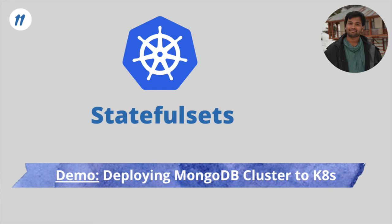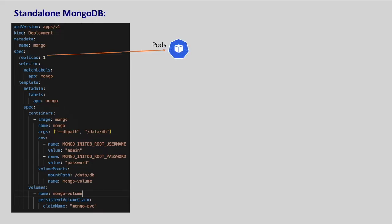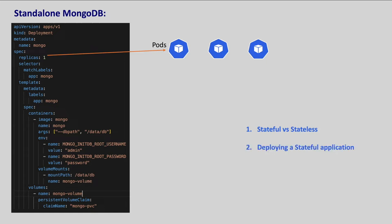Hey guys, welcome back to the Kubernetes series. In the Kubernetes Volumes chapter of this series, we deployed MongoDB with a single replica using deployments. But to achieve high availability and enhance overall performance and reliability, we should deploy multiple replicas. As MongoDB is a stateful application, we cannot use regular deployment resources to deploy multiple replicas. In this chapter, we will understand the differences between stateful and stateless applications and how to deploy stateful applications in Kubernetes using StatefulSets with complete hands-on. So without any further delay, let's get started.